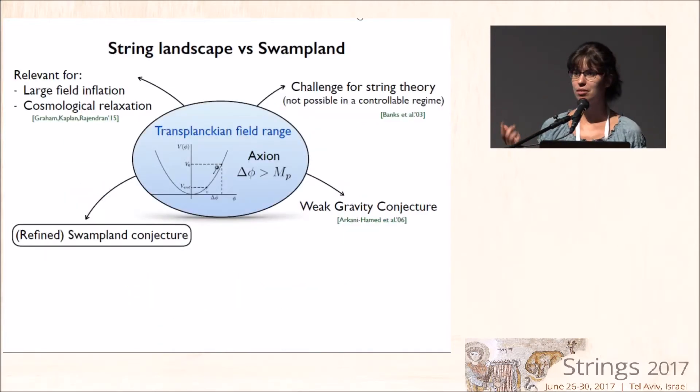So well, even if it's an old question, I think in the last years more and more people are getting interested in the properties that distinguish the string landscape from the swampland. So what are the constraints that an effective theory has to satisfy in order to be embedded in a consistent theory of quantum gravity?